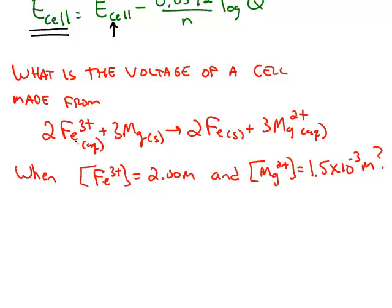So for example, here's a reaction that we could use the standard reduction potentials to calculate the standard cell voltage. And in this case, the standard cell voltage works out to be a positive 2.334 volts.